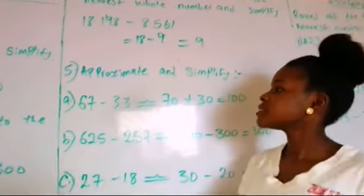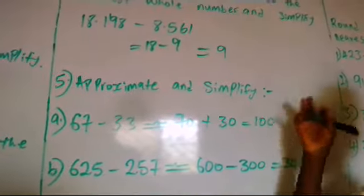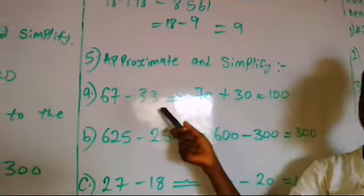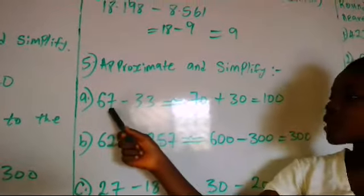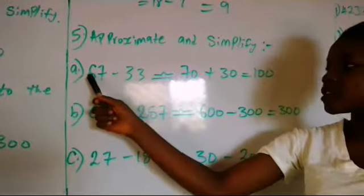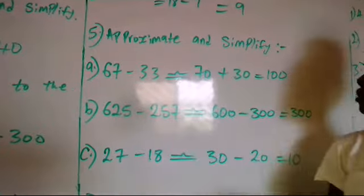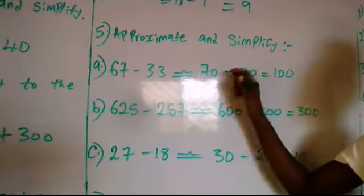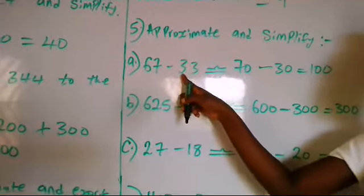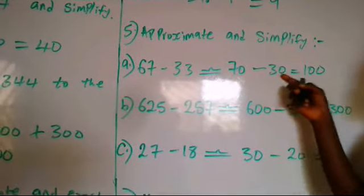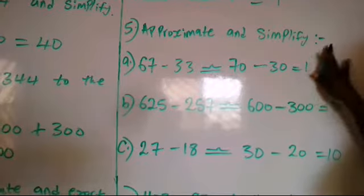Now we have another one here. Approximate and simplify the following numbers. The first one, we have 67 minus 33. So approximate it. You round this one up to 1 and put it in the 7. Then you round this one down to 0, making it 30. So we have 70 minus 30 gives us 40.